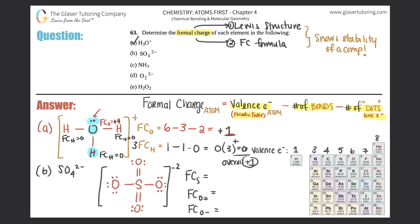Formal charge for sulfur: valence electrons from the periodic table = 6. Sulfur has six bonds attached to it — you count the double bond twice, counting every line you see. So 6 minus 6. Does sulfur have any lone electrons? No, no dots around it. So minus 0. That gives 6 − 6 − 0 = 0. Sulfur is stable.